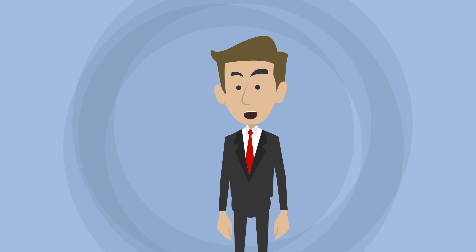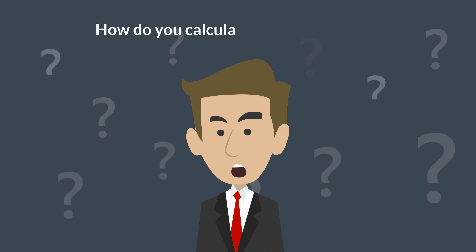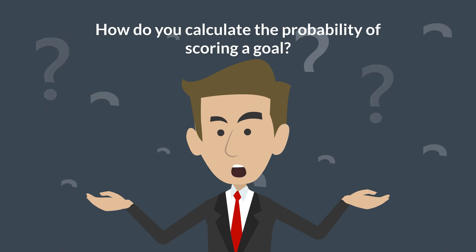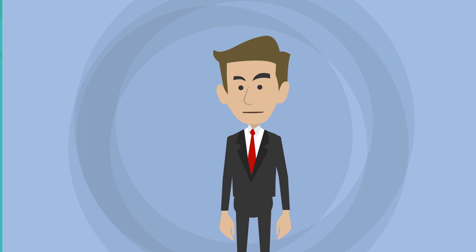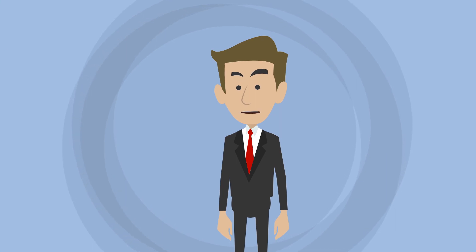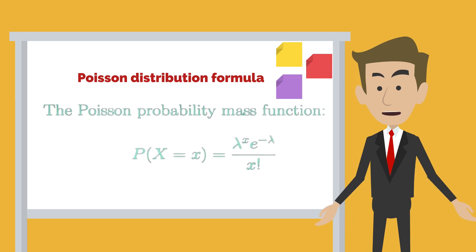Okay, so how do you calculate the probability of scoring a goal? There are different football prediction models, but let us introduce the most used one. It is called the Poisson distribution formula, and this is what it looks like. Looks scary, doesn't it?